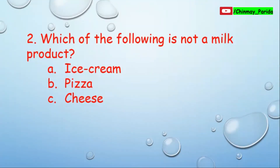Question number two: Which of the following is not a milk product? Many products are made from milk by processing it in various ways. Option A is ice cream — milk is used to prepare ice cream, so it is a milk product. Option B is pizza. Option C is cheese — cheese is a milk product. So the correct answer is option B, pizza. Pizza is not a milk product.